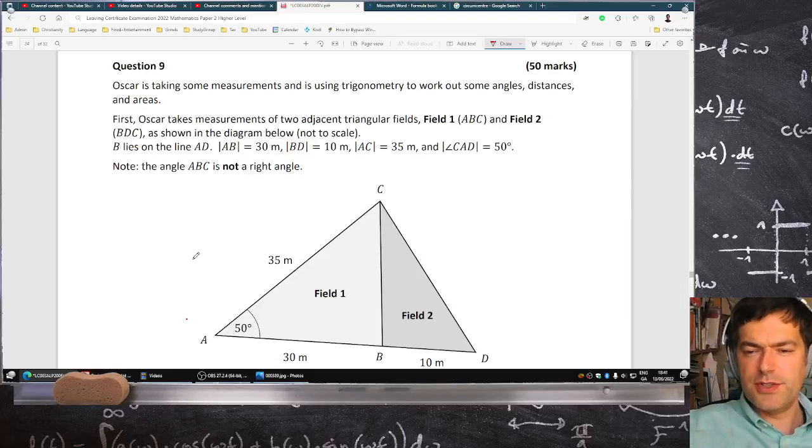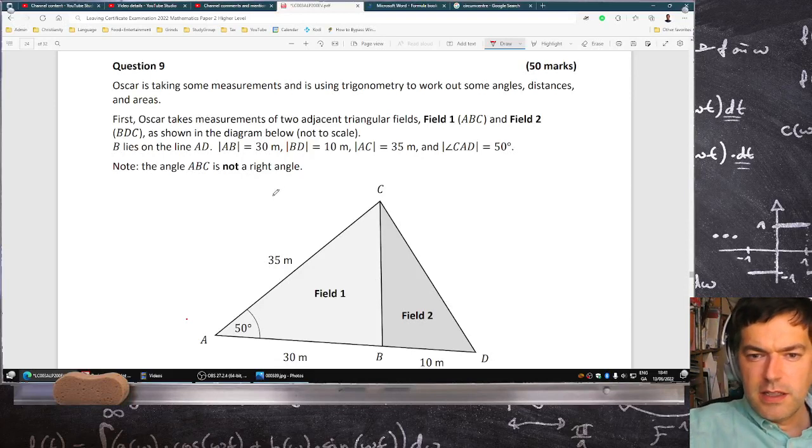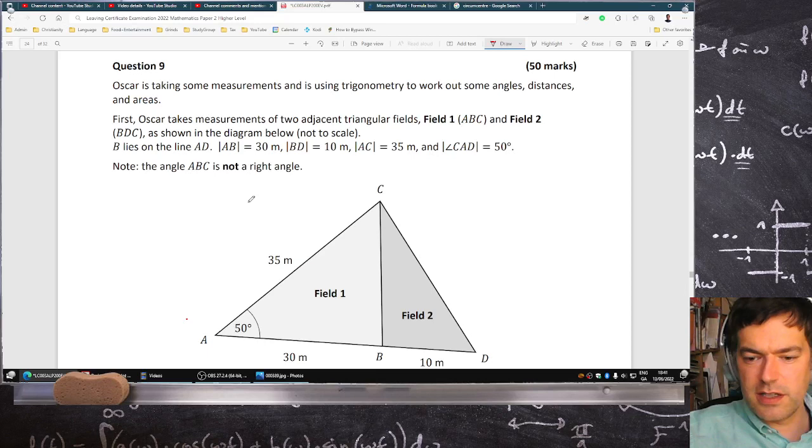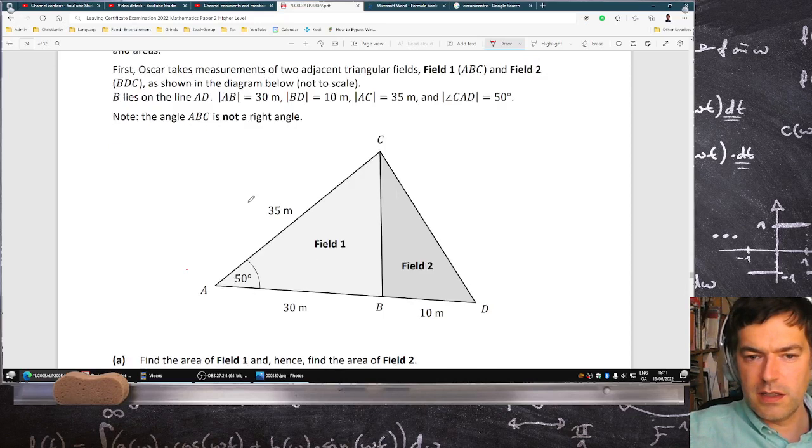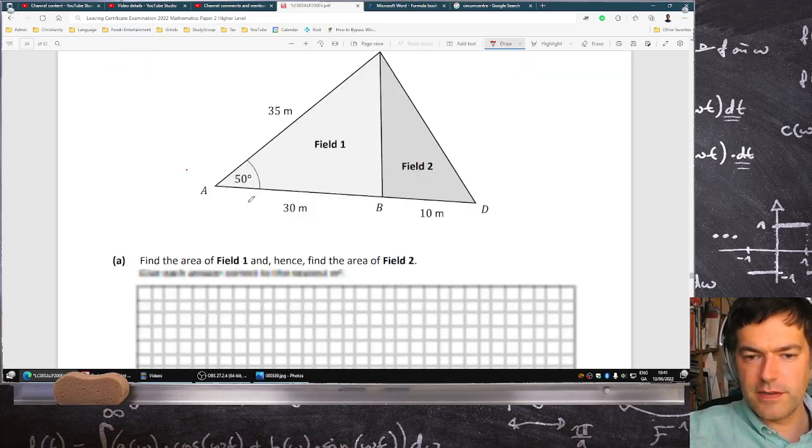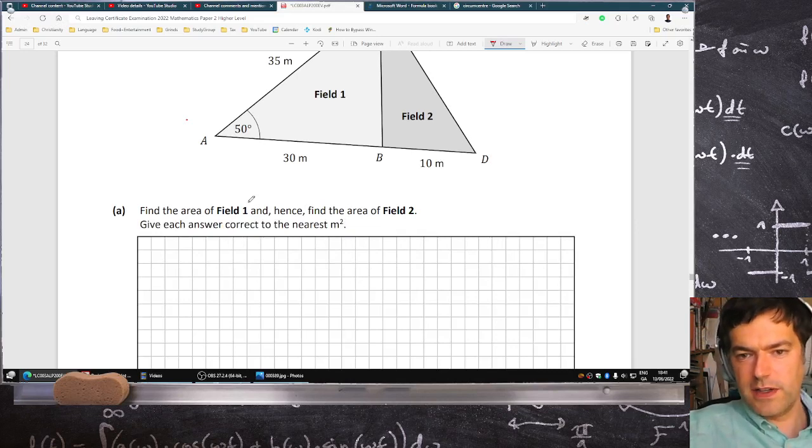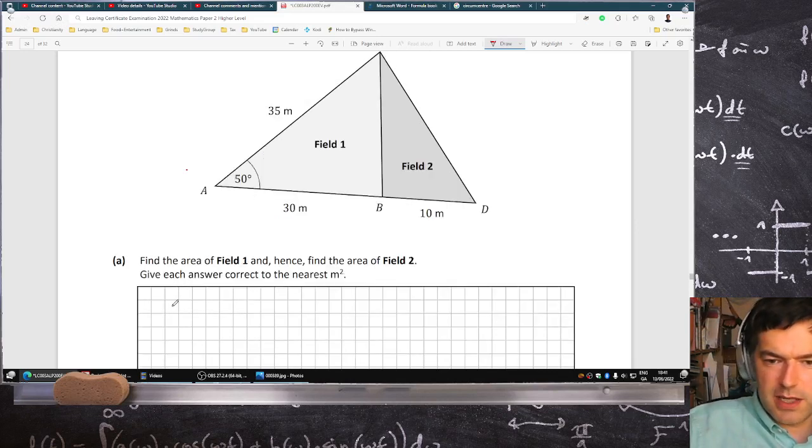Okay, Oscar's taking some measurements using trigonometry to work out angles, distances, and areas. Two adjacent fields with numbers on the diagram: 30, 10, 35, 50, and ABC. There's no right angles here. Find the area of field one and hence find the area of field two.